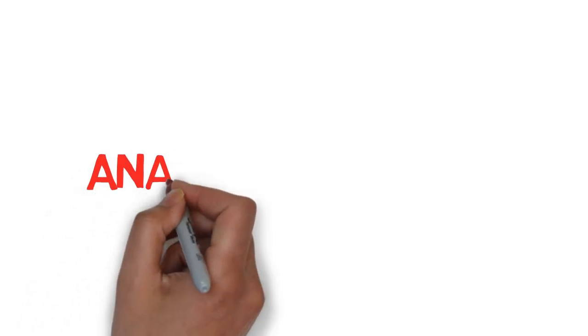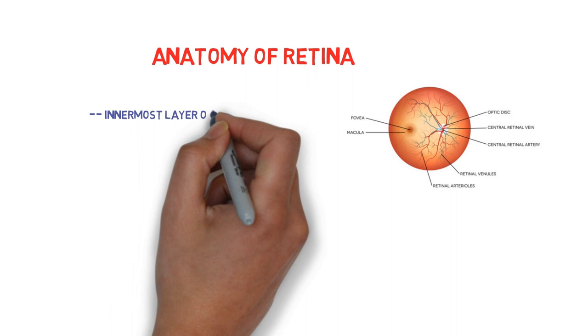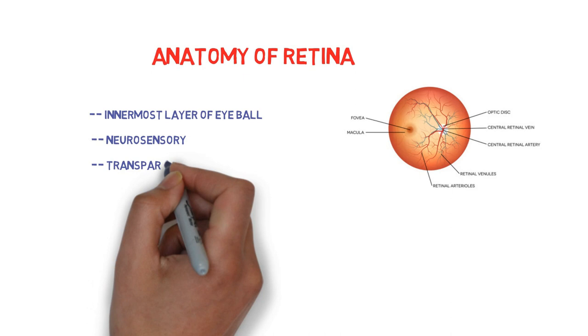Today we are going to learn about the anatomy of the retina. The retina is the innermost layer of the eyeball. It is a neurosensory layer — a thin, delicate, and transparent membrane which contains the most highly developed tissue of the eye.